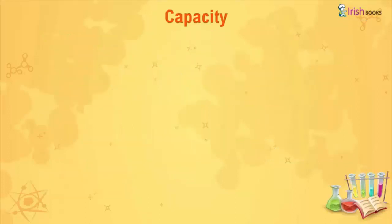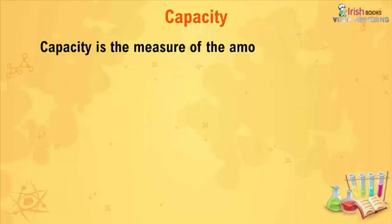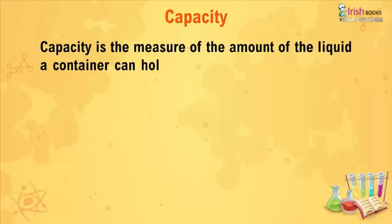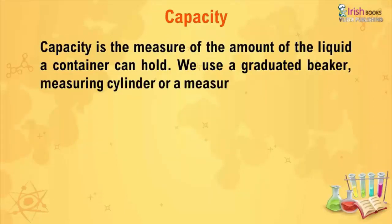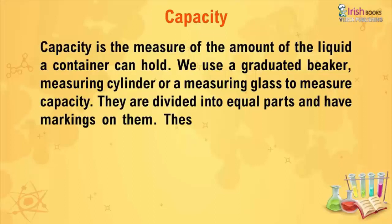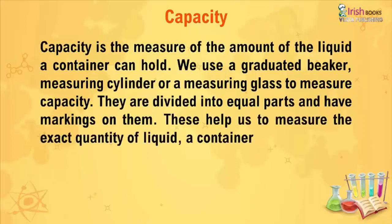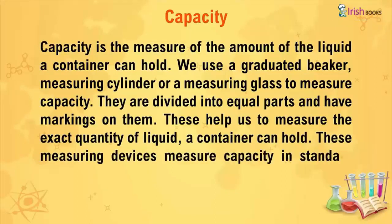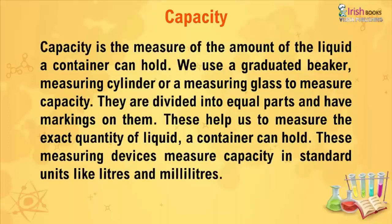Capacity is the measure of the amount of liquid a container can hold. We can use a graduated beaker, measuring cylinder, or a measuring glass to measure capacity. They are divided into equal parts and have markings on them. These help us measure the exact quantity of liquid a container can hold. These measuring devices measure capacity in standard units like liters and milliliters.